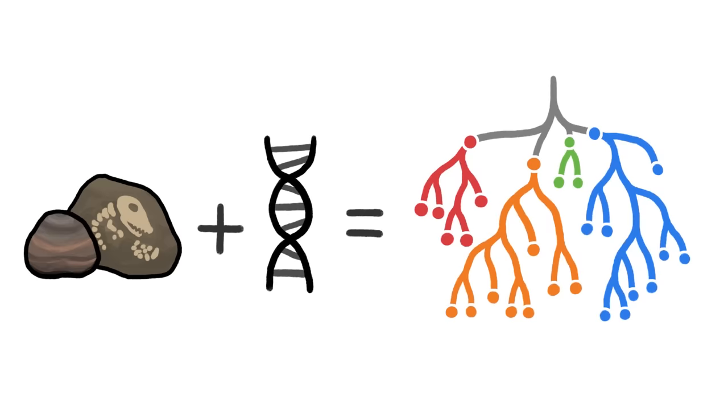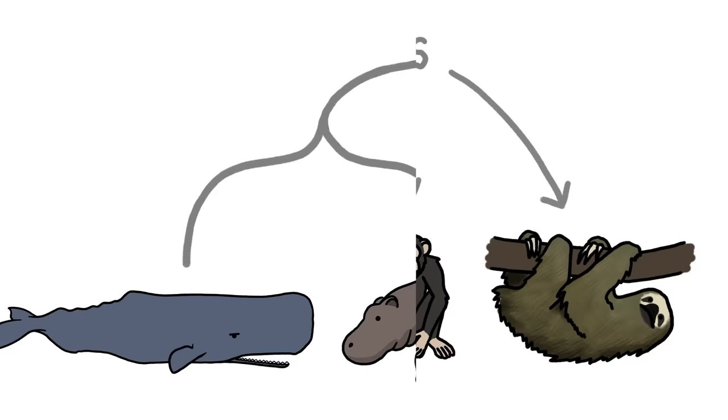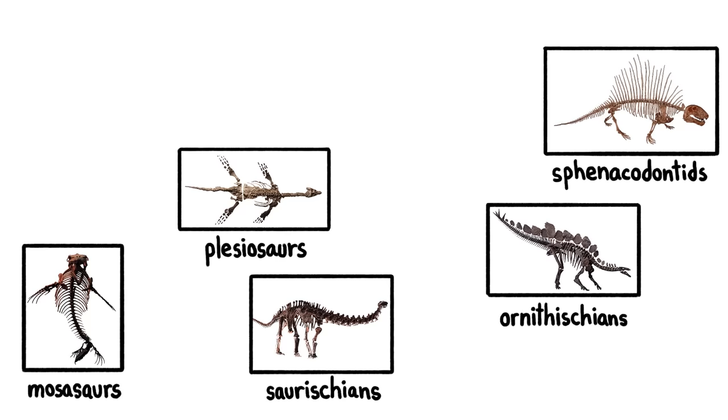So despite the fact that whales have fins, they're more closely related to hippos than to fish. And even though sloths are long-armed and hairy and climb trees, their cousins are anteaters and armadillos. And the big, scary, scaly, dead group of animals belong to several different families.